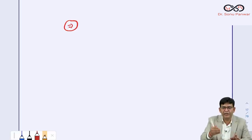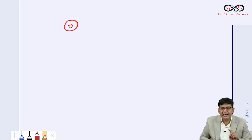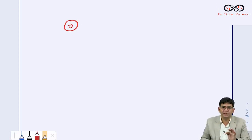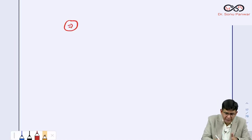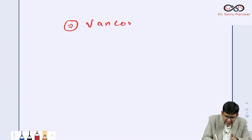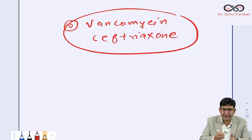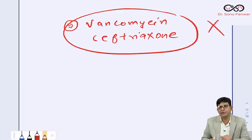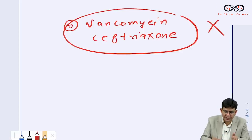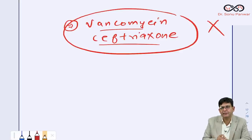Anti-pseudomonal drugs are very important — expect at least one question from this topic. Key point: vancomycin and ceftriaxone are NOT anti-pseudomonal drugs. This distinction must be remembered clearly.